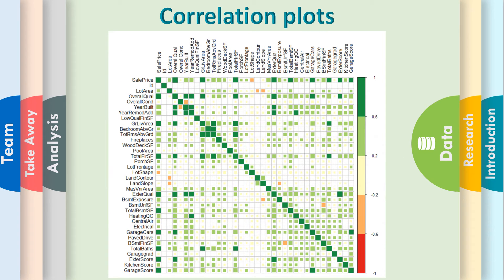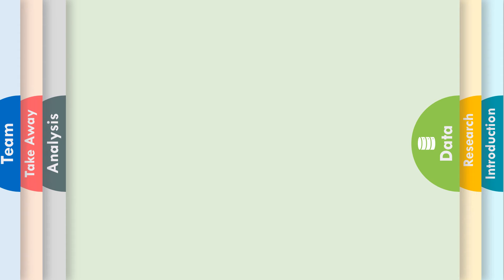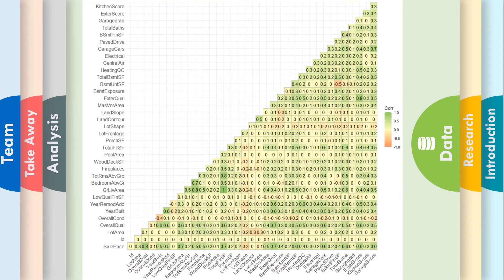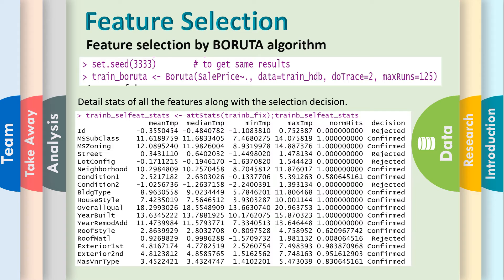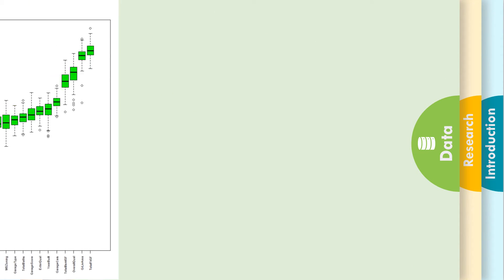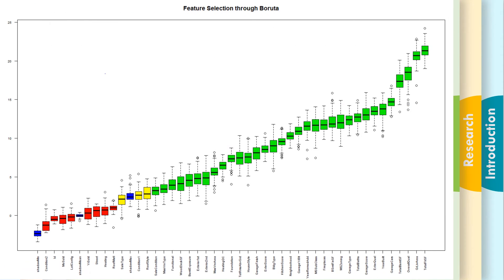Here are some correlation plots for our training dataset, identifying weak relations. We used the Boruta algorithm for feature selection. The features shown in green are selected by the Boruta algorithm.